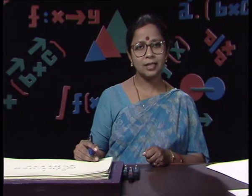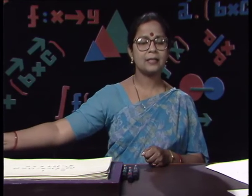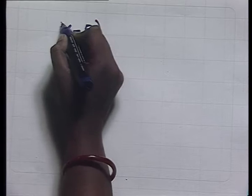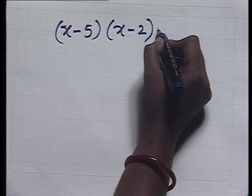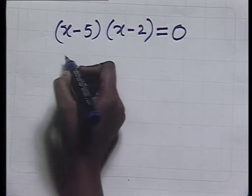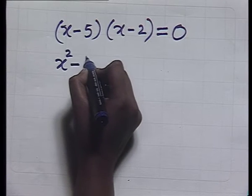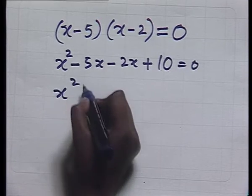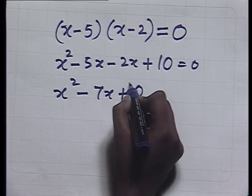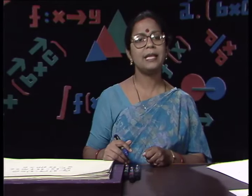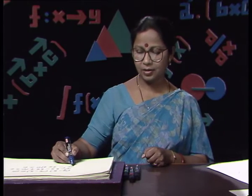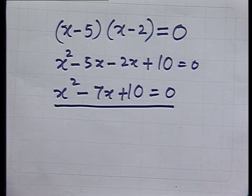Similarly, suppose we have to construct an equation whose roots are 5 and 2. Then again we think of the factors: (x - 5)(x - 2) = 0. When we multiply them and equate to 0, we get x² - 5x - 2x + 10 = 0, that is x² - 7x + 10 = 0.